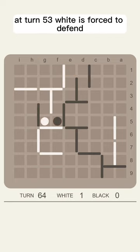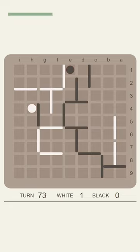At turn 53, White is forced to defend and Black just secures the endgame with his last wall available.